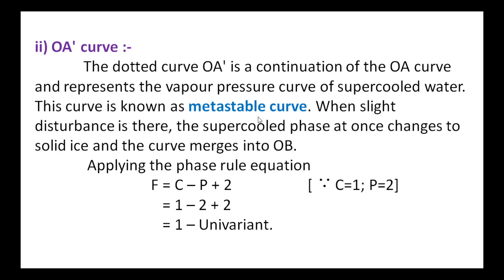Applying the phase rule equation F = C minus P plus 2 with C = 1 and P = 2 (since supercooled liquid and vapor are in equilibrium, two phases exist), we get F = 1 minus 2 plus 2 = 1, so the system is univariant here as well.